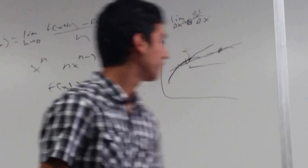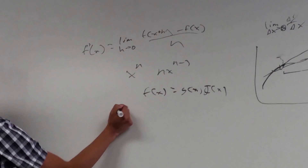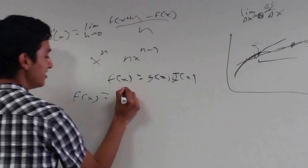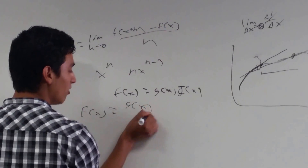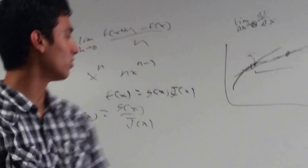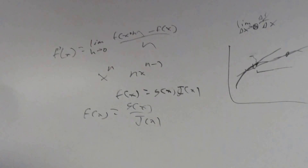Now let's go over how we would find the derivatives of quotients. Suppose I have a function f(x) defined by g(x) all over j(x). In order to find the derivative of this, we'll have to use the quotient rule, which is mathematically: the derivative of the top times the bottom, minus the derivative of the bottom times the top, all over the bottom squared. That is the essentials of derivatives.